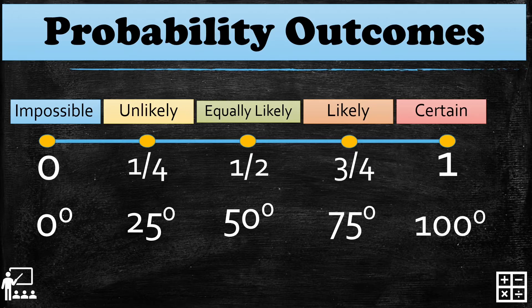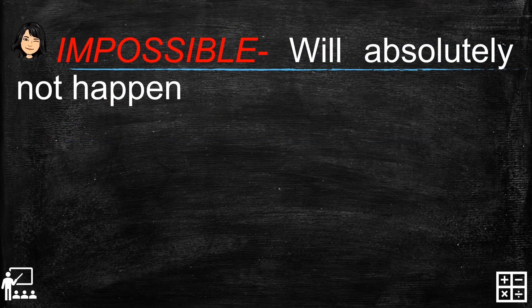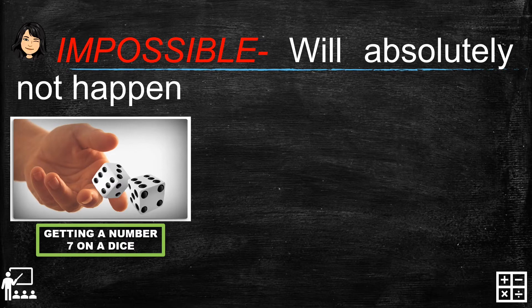Let's proceed and I'm going to show you different experiments for different probability outcomes. First, impossible — something that will absolutely not happen, zero percent chance. For example, getting a number seven on a dice. We all know that a dice is numbered from one to six; there is no number seven on a dice. So in this experiment, getting a number seven on a dice is impossible to happen.